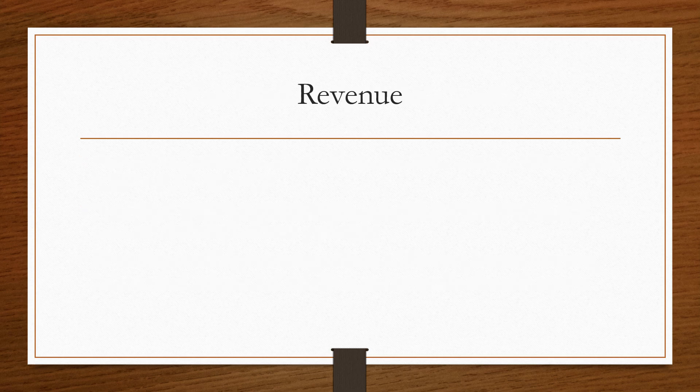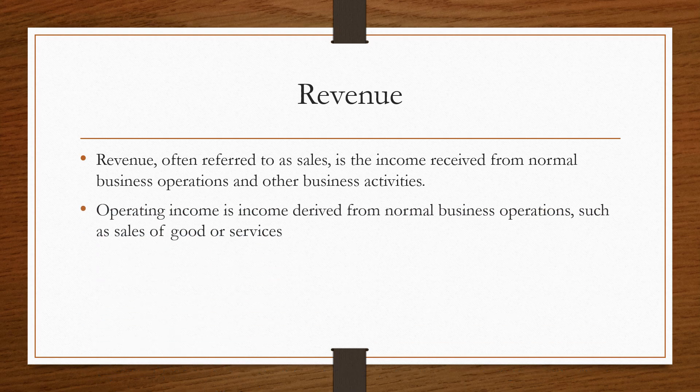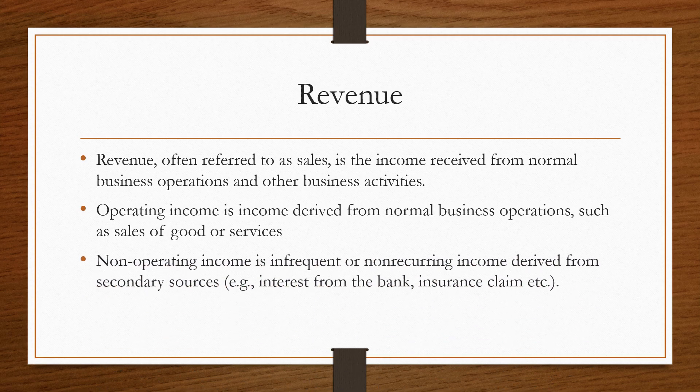The next terminology commonly used is revenue. Revenue is often referred to as sales — it is the income received from normal business operations and other business activities. There are two types of income: operating income, which is income derived from normal business operations such as sales of goods or services; and non-operating income, which is infrequent or non-recurring income from secondary sources, for example interest on cash in your bank or an insurance claim during the year.